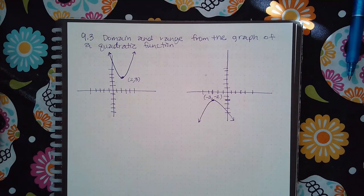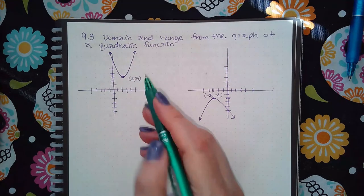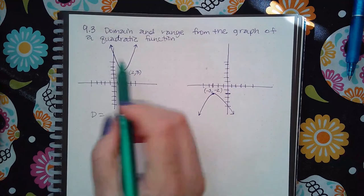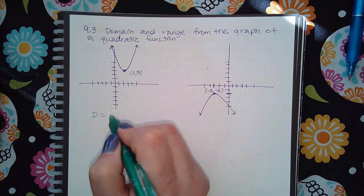Here we have the domain and range from the graph of a quadratic function. The domain is from left to right. Since it goes to the left forever and to the right forever, the domain is going to be negative infinity to infinity.